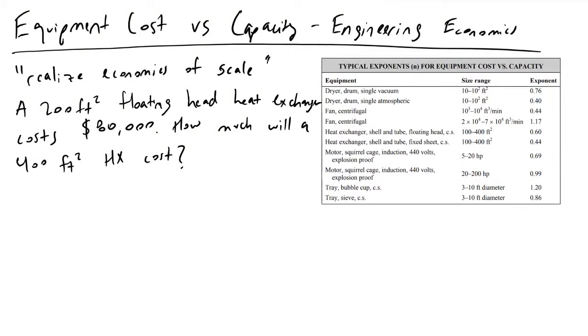Economists are known for tossing a phrase around called realizing economies of scale. Essentially what it means is that as we make our processes bigger, things get cheaper to make per unit. We become more efficient at making things as we make them on larger scales.